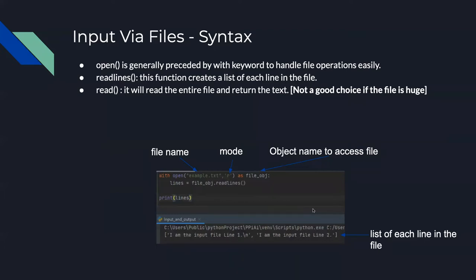Input via files — the syntax. Open is generally preceded by the with keyword to handle file operations easily. readlines() is a function that creates a list of each line in the file. read() reads the entire file and returns it as a single large string — not a good choice if the file is huge, as it can create a massive variable in your Python environment.